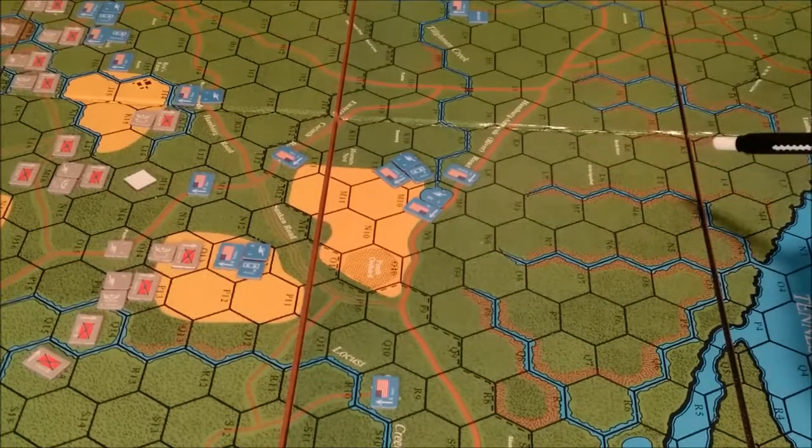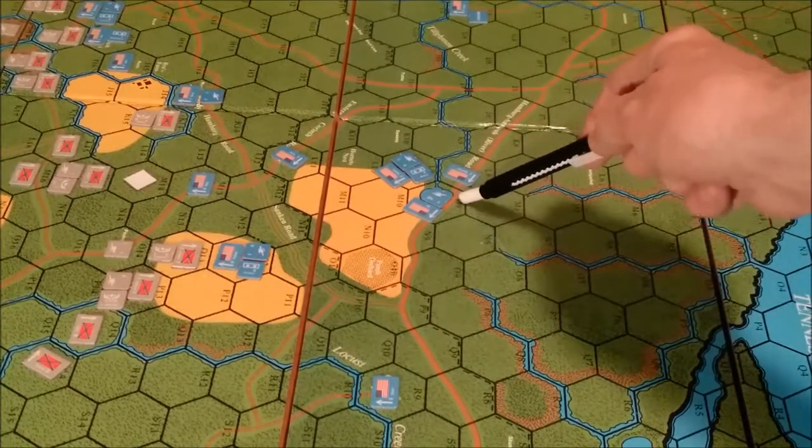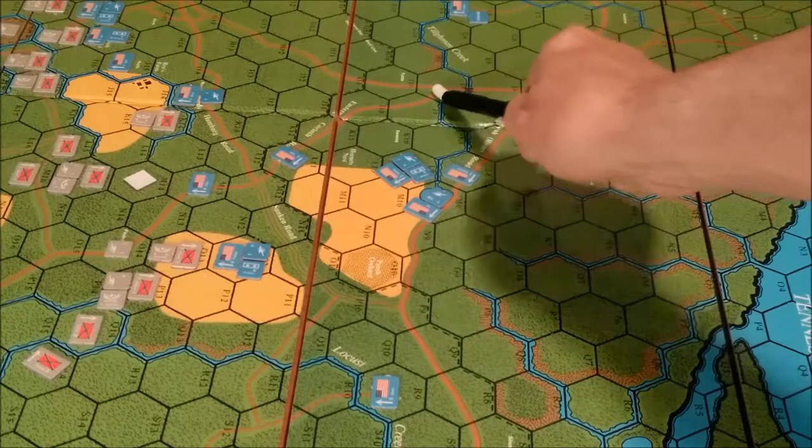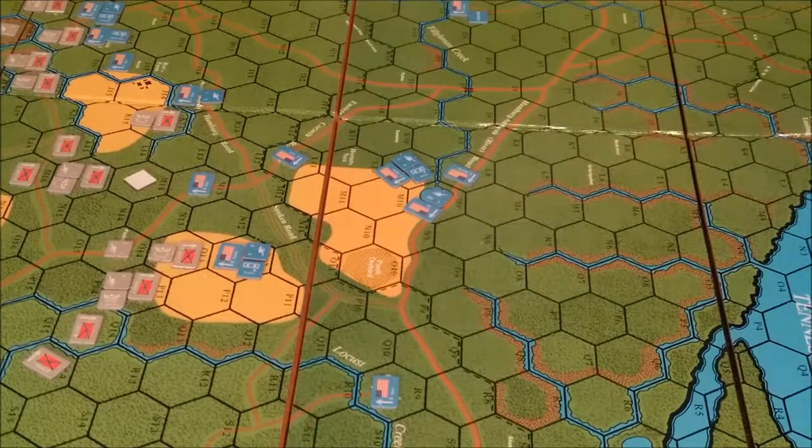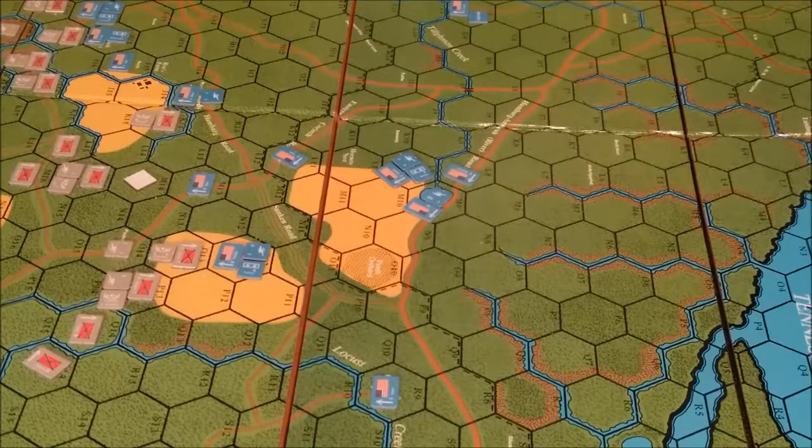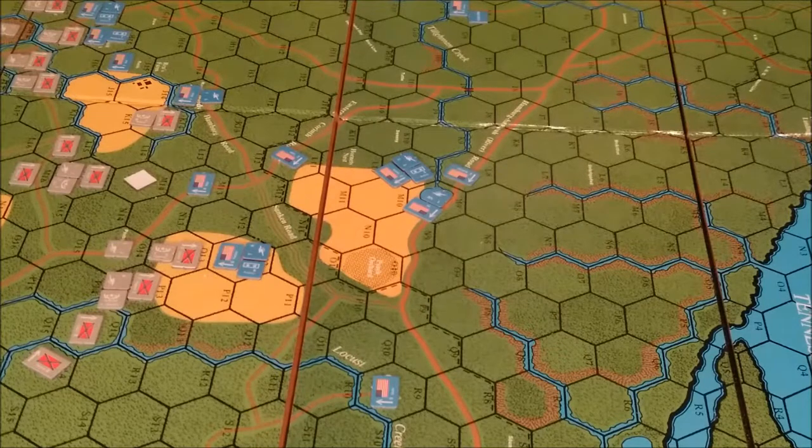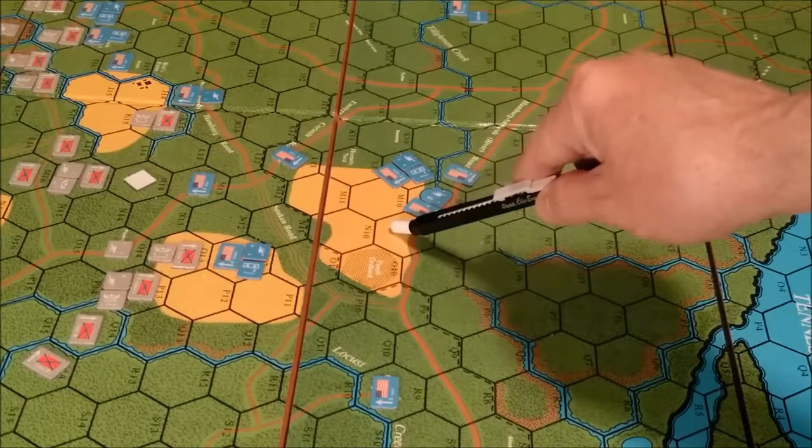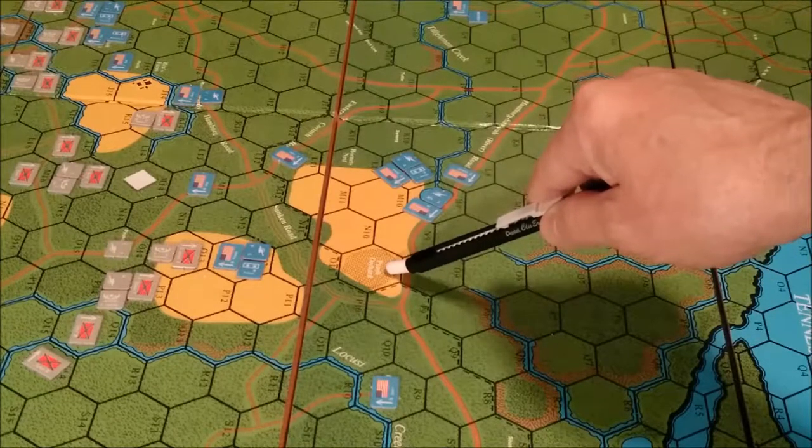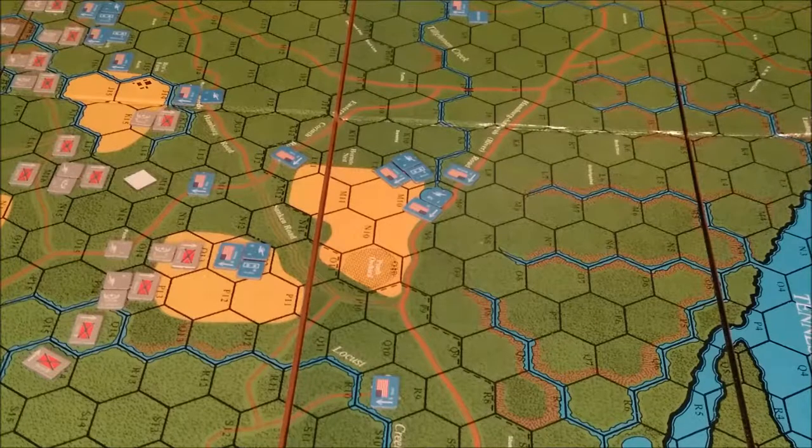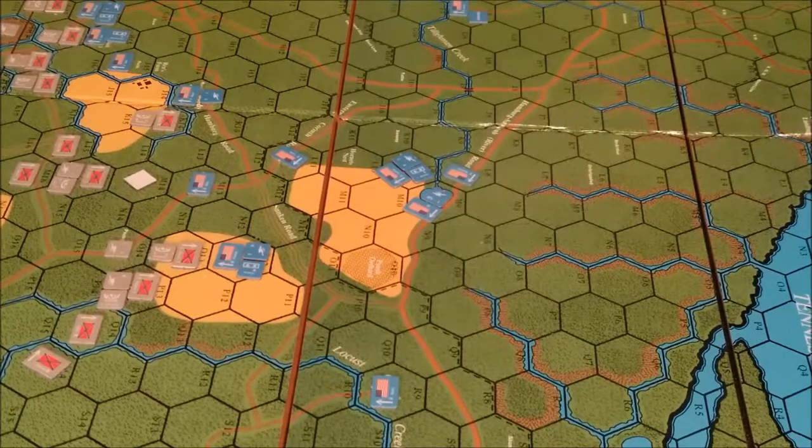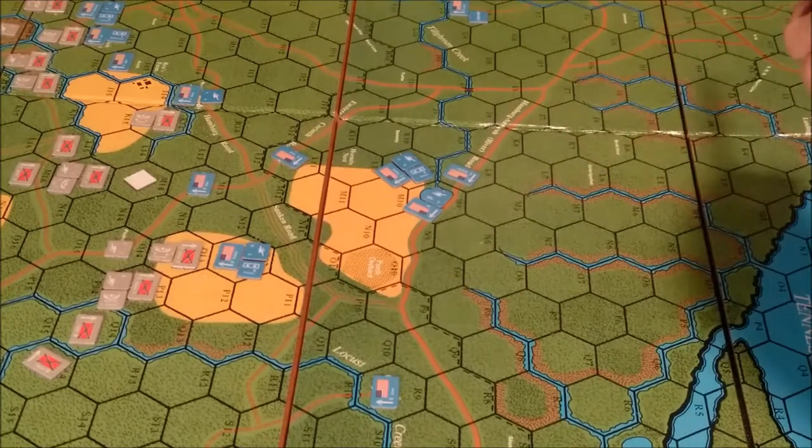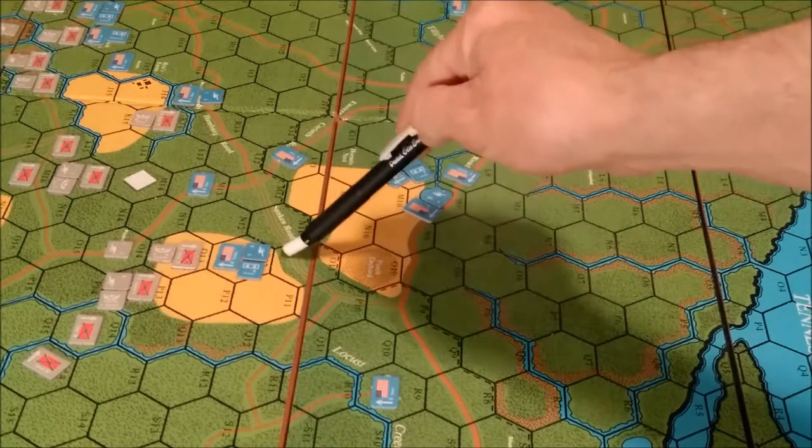A bridge hex side is any hex side where a road crosses a stream. And it can only really be utilized by units in column. These areas are clear. The peach orchard - anything that's predominantly yellow. We have the hornet's nest there. We have the sunken road there.